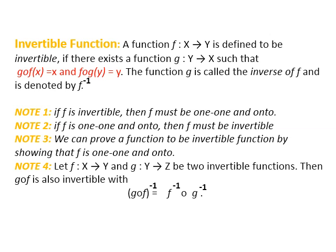Second point: if f is one-one and onto, then f must be invertible. This is very important — when we have to prove that a certain function is invertible, we simply prove that the given function is one-one and onto. Third point: let f from X to Y and g from Y to Z be two invertible functions. Then gof is also invertible, and (gof)⁻¹ equals f⁻¹∘g⁻¹. Pause the video and note down the definitions.